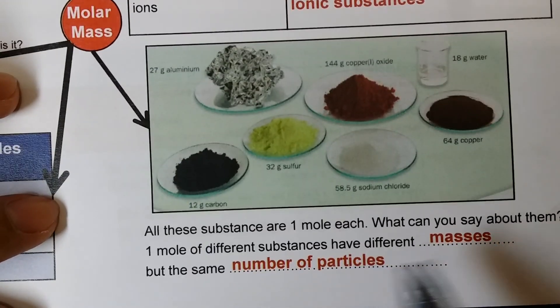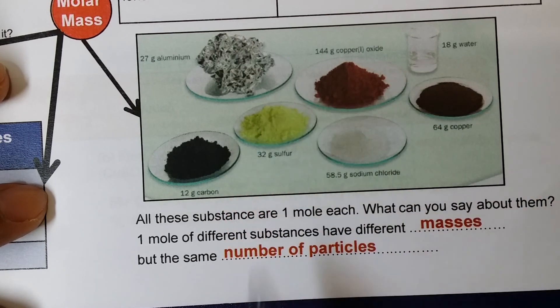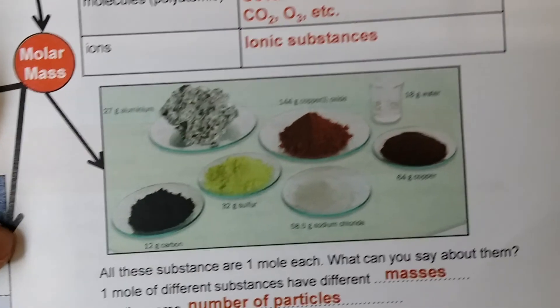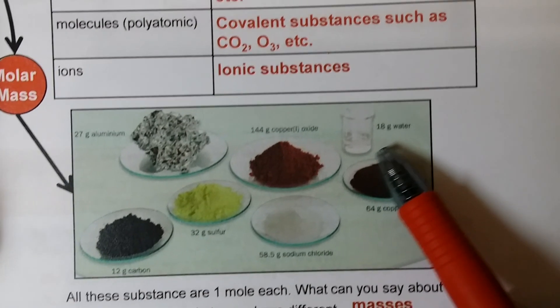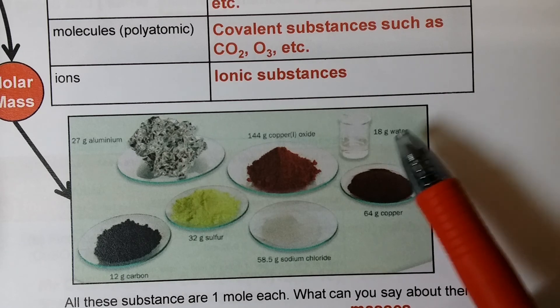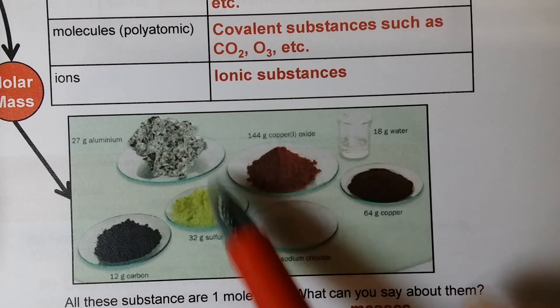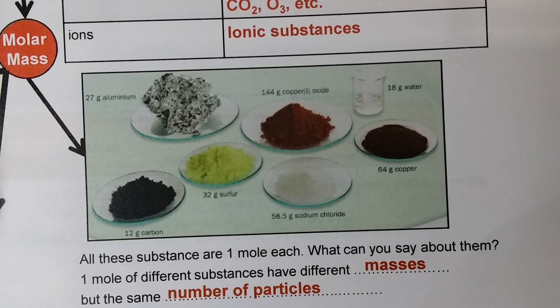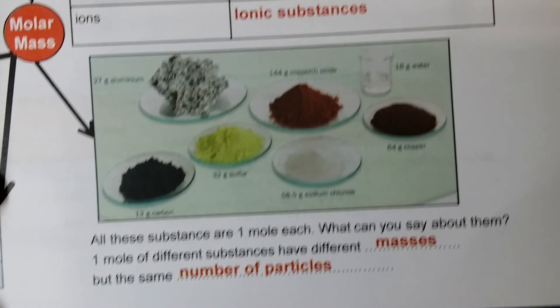From the diagram in your textbook, you can see that all these substances are 1 mole each, but they all have different masses. For example, 64 grams of copper is 1 mole of copper — it has 6 × 10²³ copper atoms. A glass of water that is 1 mole would have 6 × 10²³ water molecules. So different substances that are 1 mole each have different masses, but the same number of particles.